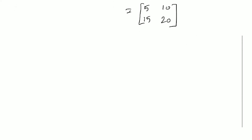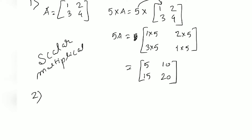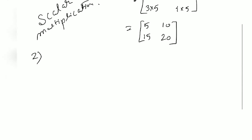That gives us 5A equal to [[5, 10], [15, 20]]. If you have not watched our previous video, you can click on the i button at the end of the video to watch it. This operation is termed scalar multiplication.